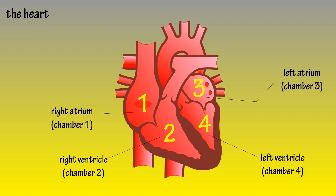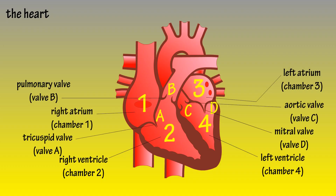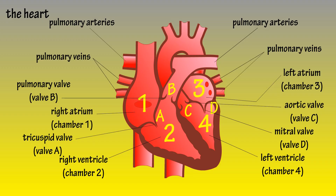The heart consists of four chambers and four valves, as you can see labeled here. There are the pulmonary arteries, which carry oxygen-poor, or deoxygenated, blood from the heart to the lungs. Here are the pulmonary veins, which carry oxygenated blood from the lungs to the heart.